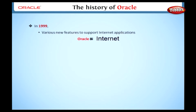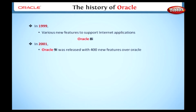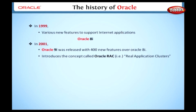Here, 'i' refers to the Internet. In 2001, Oracle 9i was released with 400 new features over Oracle 8i. Oracle 9i introduced the concept called Oracle RAC, that is, Real Application Clusters, which creates a computer cluster database.